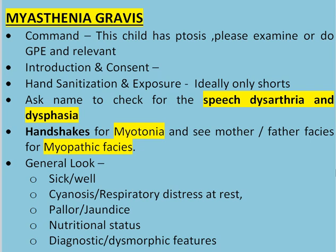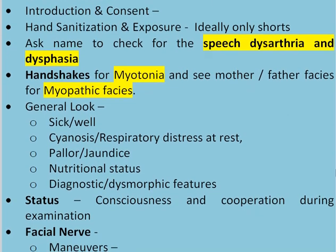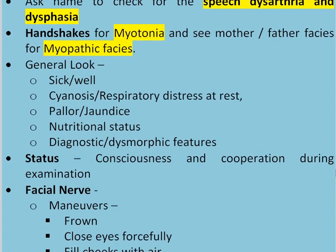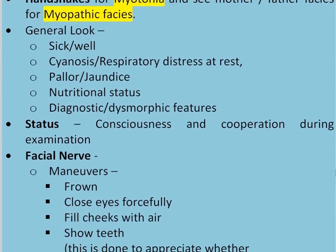Start by asking the name of the child to check for speech dysarthria and dysphagia. Handshake for myotonia and observe the mother and father for myopathic facies. Then in all short cases, stand back and assess the general look: whether the child is sick or well-looking, cyanosed or having respiratory distress at rest, any pallor or jaundice, the nutritional status, and any diagnostic or dysmorphic features. Then check the consciousness and cooperation during the examination.